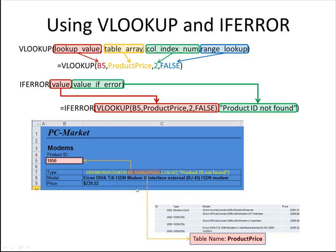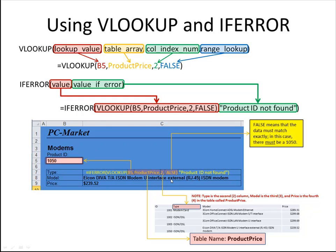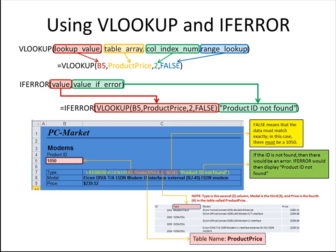Then it says use the table called product price. In that table, look at the second column. Note that type is the second column, model is the third column, and price is the fourth column. We'll use those numbers in the following two cells to display the model and price. False means the data must match exactly — there must be a 1050. Otherwise, we display an error that says 'product ID not found.' So let's go see how this looks in Excel.